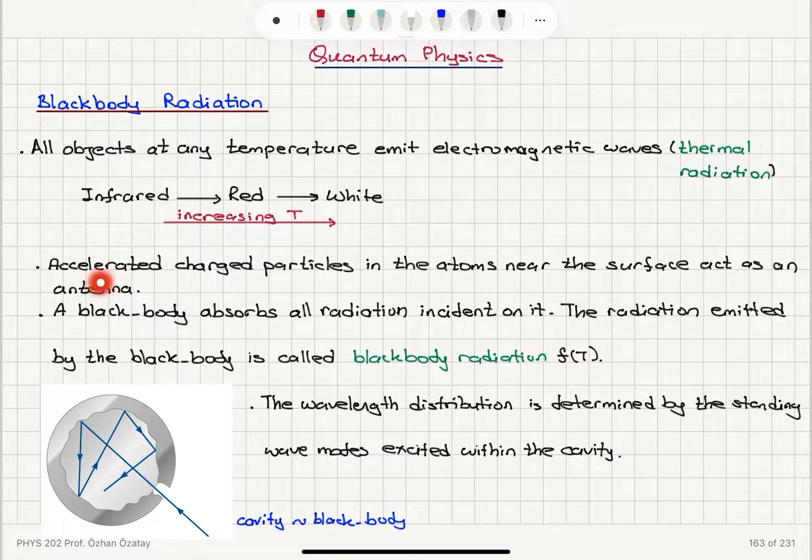The accelerated charged particles in the atoms near the surface act as an antenna. So you know that electromagnetic waves are generated due to accelerated charged particles, and near the surface of the object, the atoms will have electrons that are basically vibrating due to finite temperature. And these accelerated charged particles will act as an antenna producing the thermal radiation.